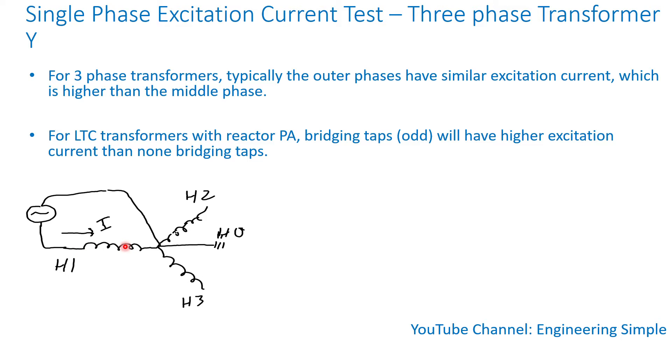And you apply the voltage with the other winding open. The winding that's not tested is left open.